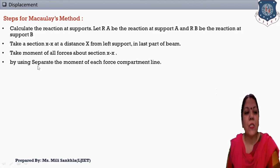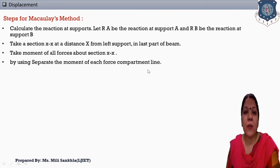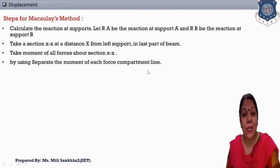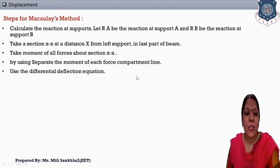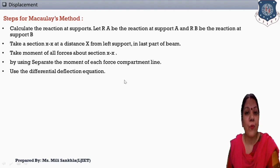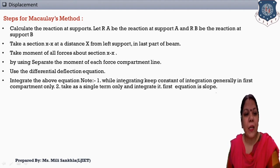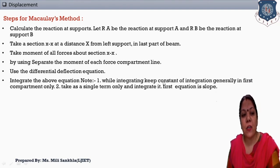We take the moment of all given forces and our support reactions about the X-axis, which will be on the right-hand side. Next, separate the moment of each force using a compartment line — it is not necessary, but we should try to use it. Then, use the differential equation of deflection that we already proved: EI d²y/dx² = -M.